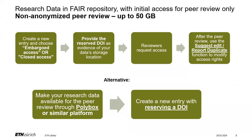Now let's move on to the last use case, where the data should already be in a FAIR repository and the reviewers should have access to the data during the peer review. Our recommendation differs depending on whether the peer review is conducted as a non-anonymized or a single or double blind review. In a non-anonymized peer review, the authors may be aware of the reviewers' identities. In this case, we recommend creating a new entry in the research collection and choosing an embargoed access or closed access, so that you can provide the DOI to the publisher. The reviewers can then request access, and this request will be forwarded to you for approval.